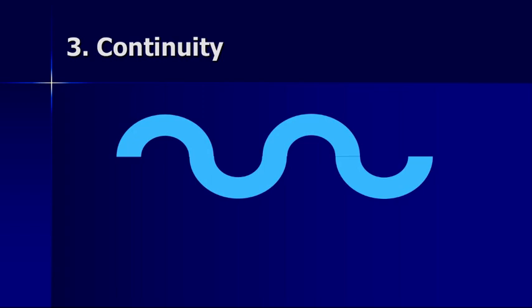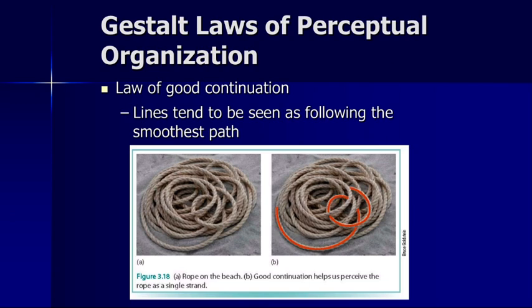With continuity, we simply believe that objects are continuous. We generally see a continuous waving object rather than a bunch of individual segments. A much better example is a rope — we perceive it as one single rope because of continuity rather than a bunch of individual segments, seeing that the rope continues on rather than thinking of it as discrete objects. Lines tend to be seen as following the smoothest paths. One of the easiest ways to think about the Gestalt principles is they follow Occam's razor — the simplest explanation is preferred — and our visual systems are essentially tuned to come up with the simplest explanation.